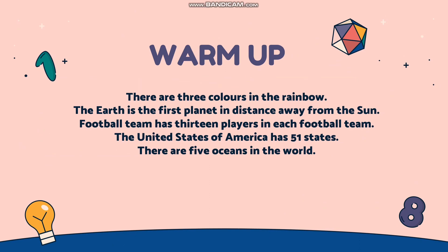Let's start from the warm-up. There are five sentences which need to be corrected. The task is to say the correct sentences. There are three colors in the rainbow. The Oz is the first planet in distance away from the Sun. A football team has 13 players. The United States of America has 51 states. There are five oceans in the world.